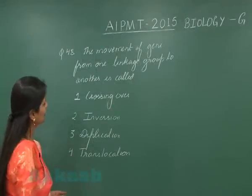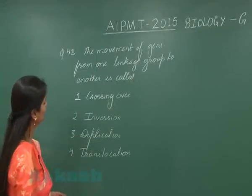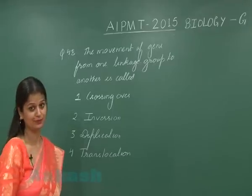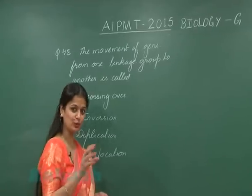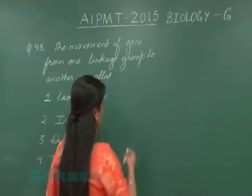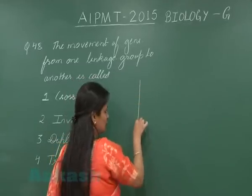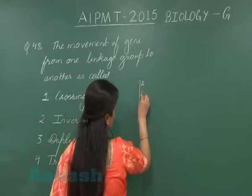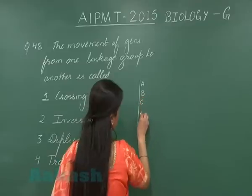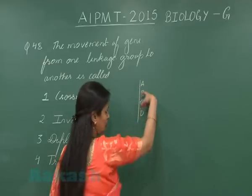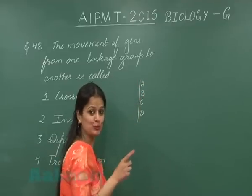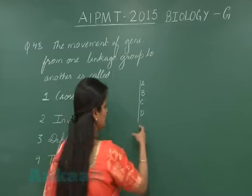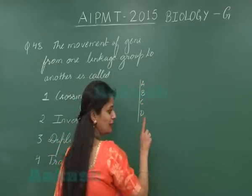Question number 48: the movement of a gene from one linkage group to another is called what? First, let's understand what a linkage group is. Consider a chromosome — genes are present on it in a linear manner. All the genes present on a chromosome represent linked genes, and together they form one linkage group.